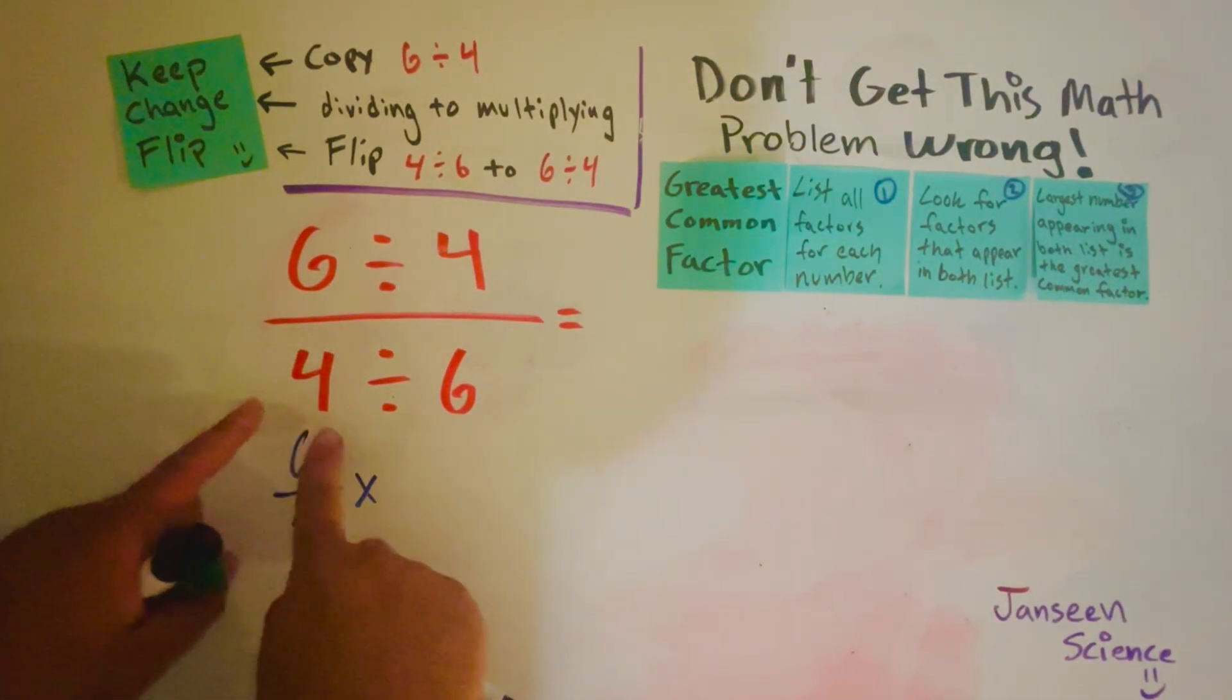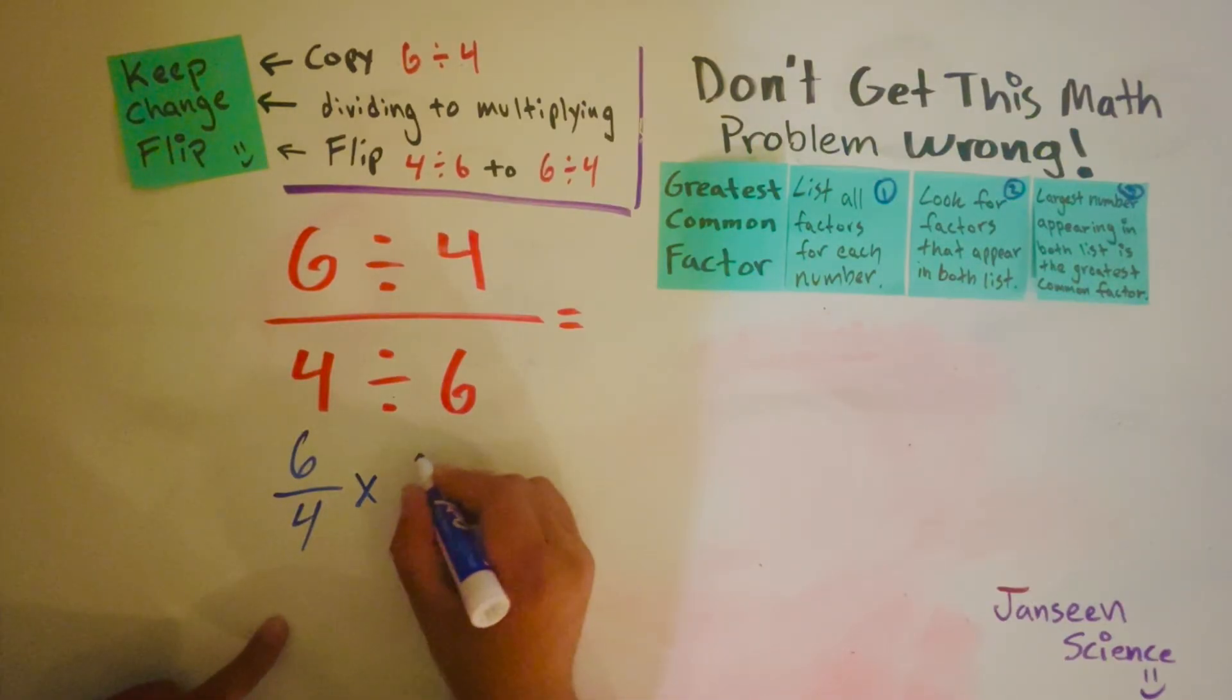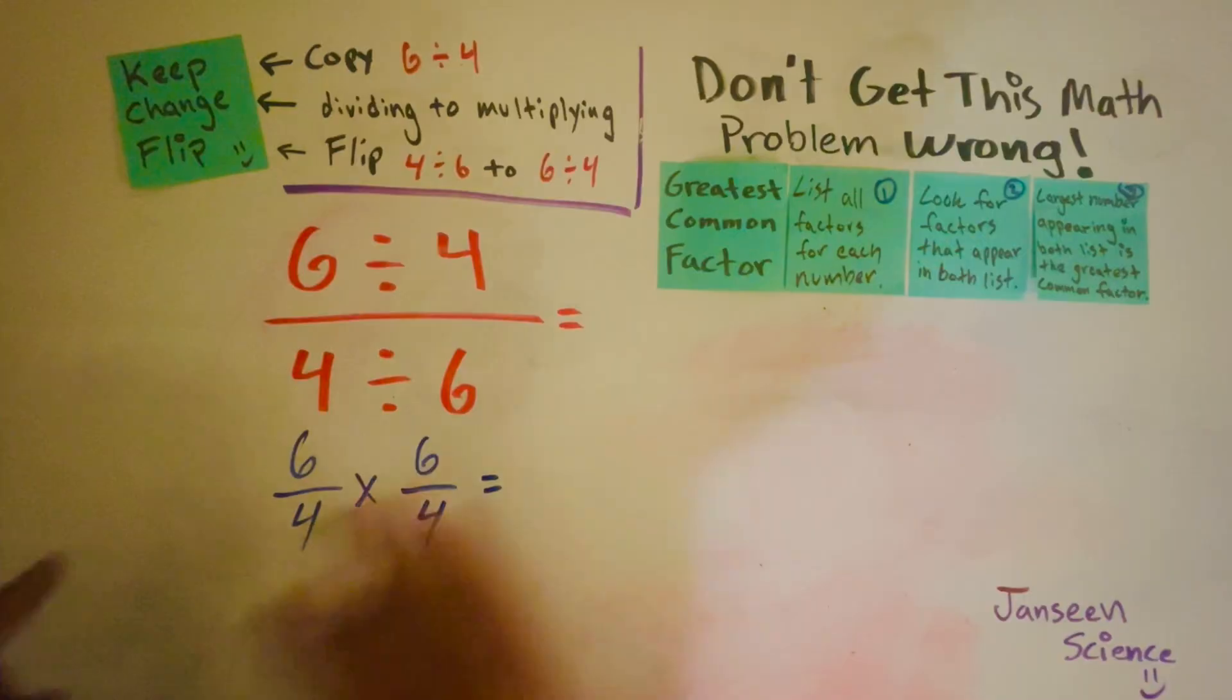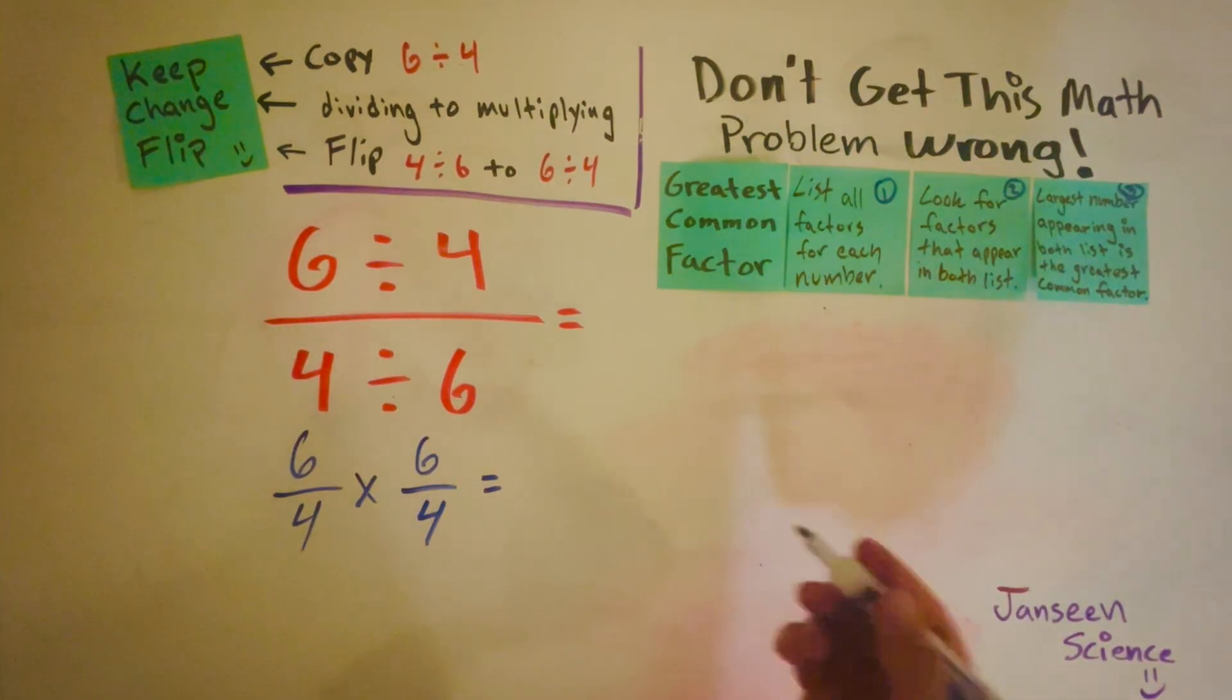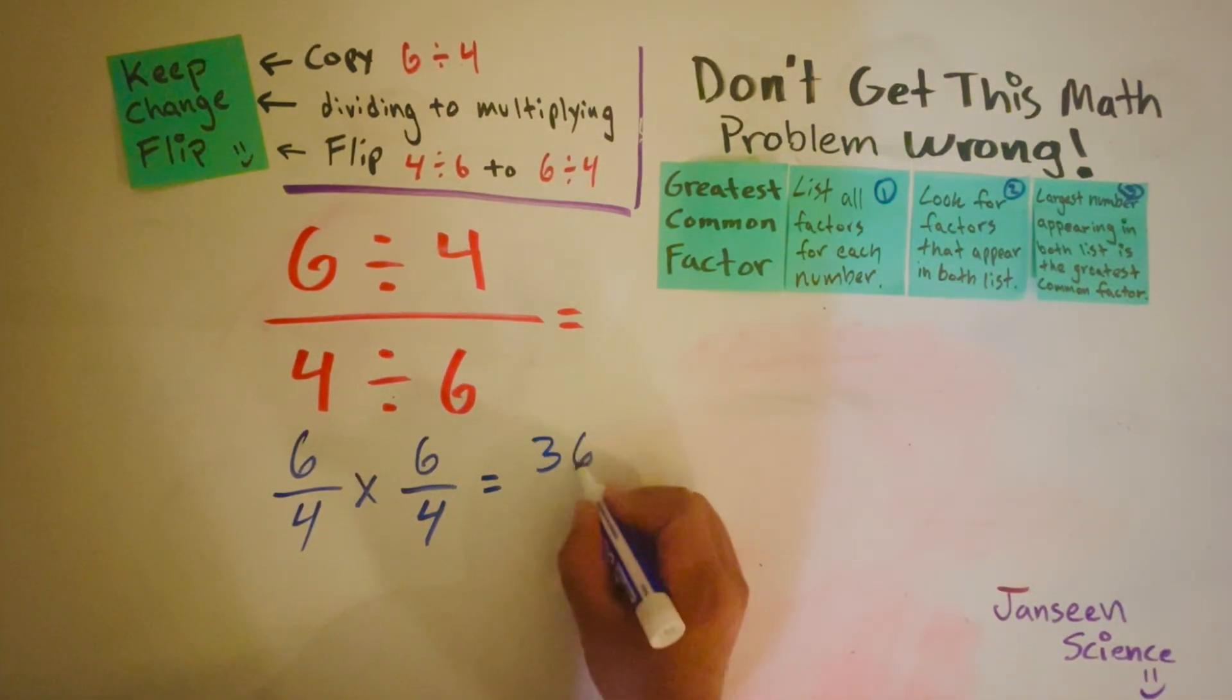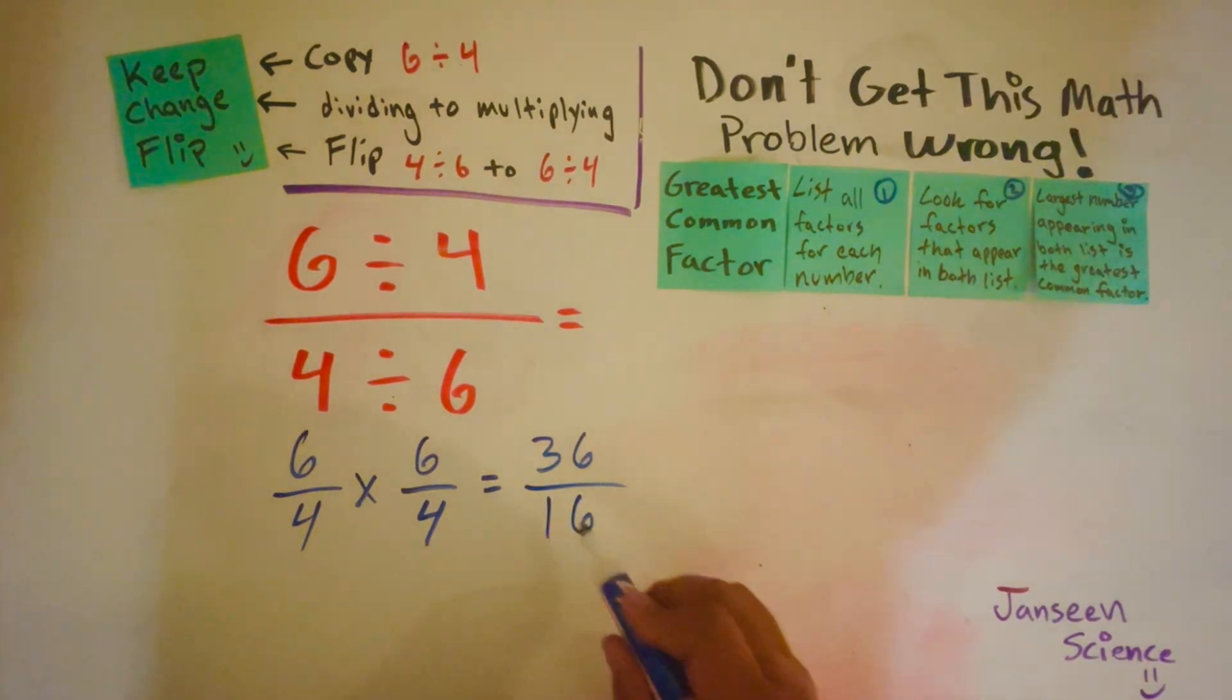And then lastly we want to flip 4 divided by 6, so it'll be written like this: 6 over 4, and then we just multiply across. 6 times 6 is 36, 4 times 4 is 16, so we got 36 over 16.